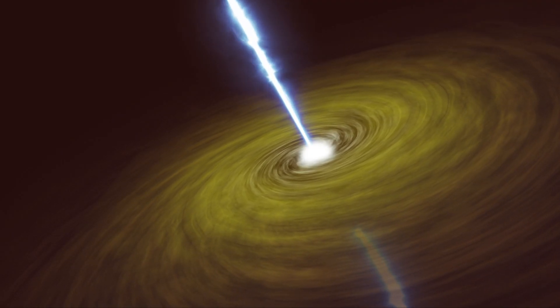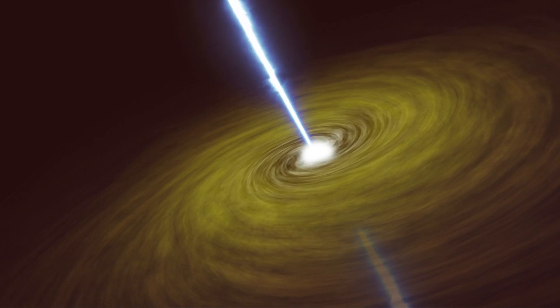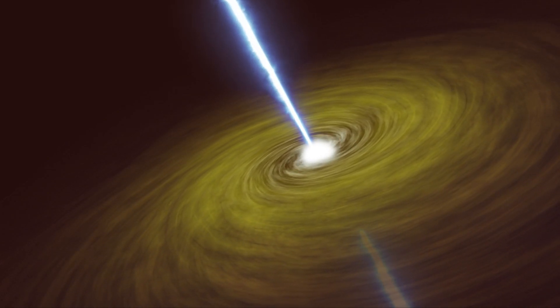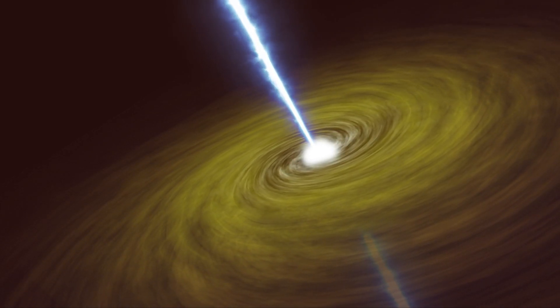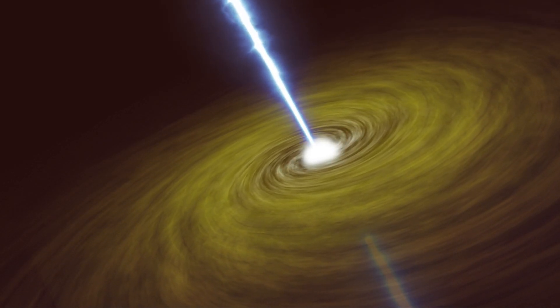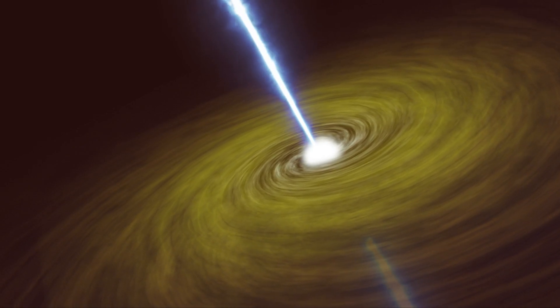Before that, in 2012, researchers discovered the huge large quasar group, spanning 4 billion light years. So now we have multiple massive structures that break the rules. Are these cosmic coincidences? Or are we missing something big?